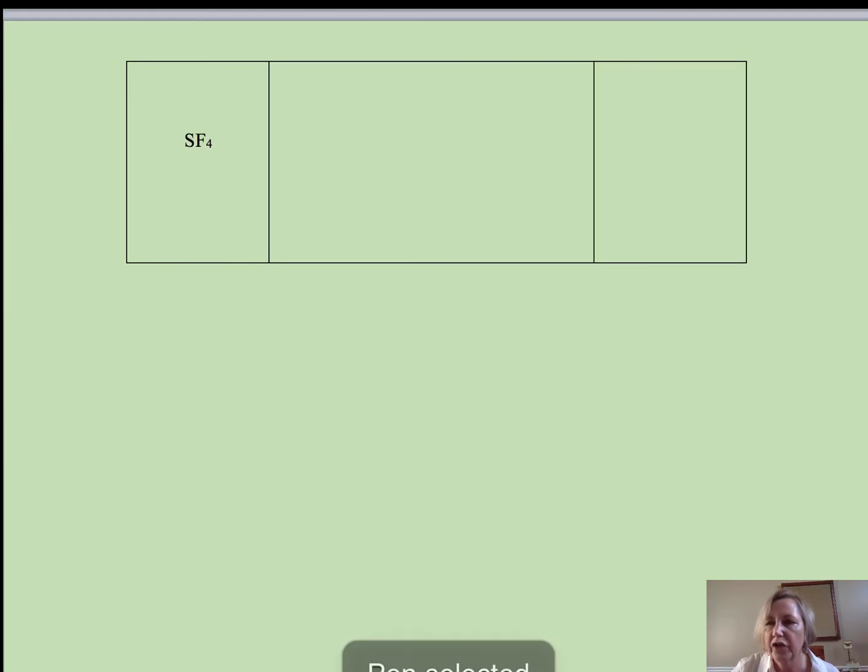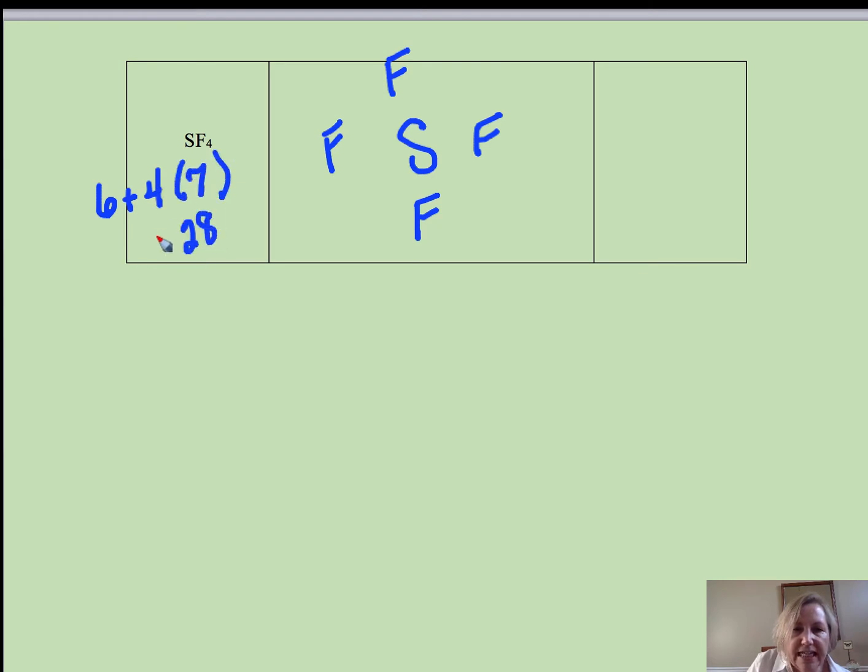Okay, so let's take a look at one more: this is SF4, sulfur tetrafluoride. There's only one sulfur, it's the least electronegative, we're going to put it in the center, spread your fluorines out. Sulfur has six valence electrons, we have 4 times 7, that gives us 28 plus 6, so we have...